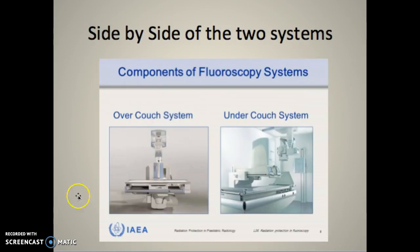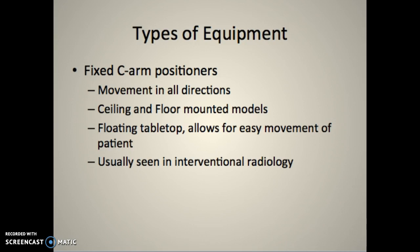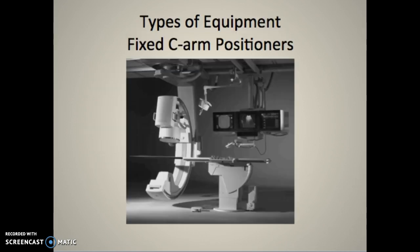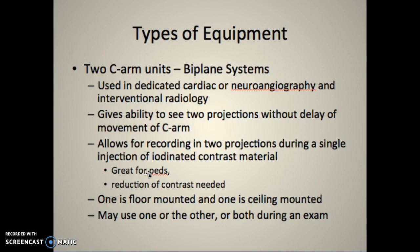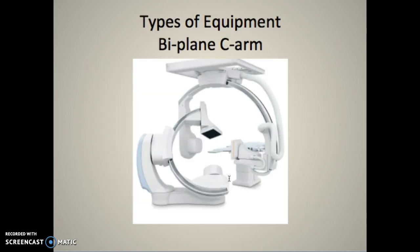Here are the two systems - over the couch and under the couch. Fixed C-arm positioners move in all directions, are floor-to-ceiling mounted, with floating table tops for easy patient movement. We can also move the C-arm so it's easier for the doctor without moving the patient. There's a biplane unit, great for neuro work - you can see two projections at the same time, which is great for pediatrics and reduction of contrast. One is floor mounted and one is ceiling mounted, and you can use one or both simultaneously to speed up the study.